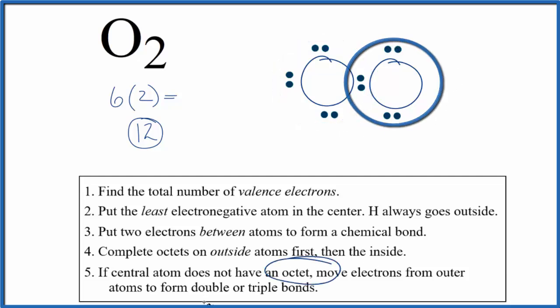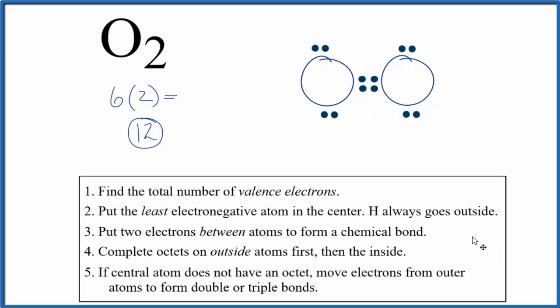So what we can do if we don't have that octet is form double or triple bonds. We can move this pair of electrons between the oxygen atoms and that forms the double bond. We're still using 12 valence electrons but now this oxygen has an octet and this oxygen has an octet.